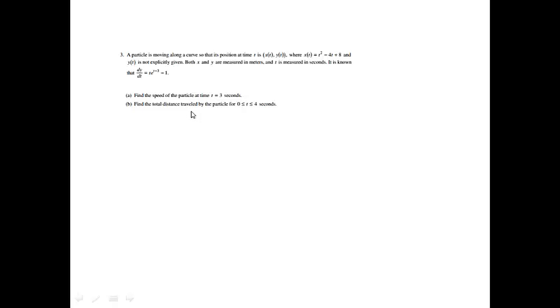Problem 3. A particle is moving along a curve so that its position at time t is (x(t), y(t)), where x(t) equals t squared minus 4t plus 8, and y(t) is not explicitly given. Both x and y are measured in meters, and t is measured in seconds. It is known that dy/dt equals t*e^(t-3) minus 1.